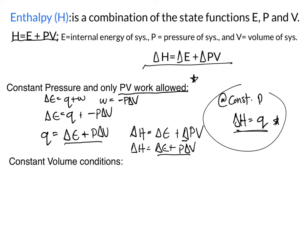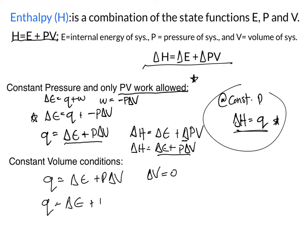At constant volume conditions, using our equations, we get Q equals delta E plus P times delta V. Under constant volume, the volume of the container is not being altered, meaning there is no change in V — delta V equals zero. Plugging in zero cancels out the pressure-volume work term, leaving delta E equal to Q.